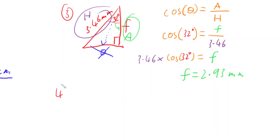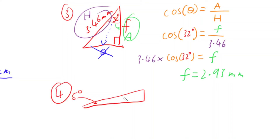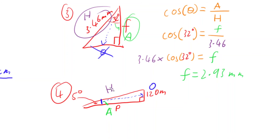Let's look at one last example. I have a right-angled triangle with an angle of 5 degrees, the side labelled P as the unknown, and the side 120 metres. Labelling the sides: the hypotenuse is the long slopey side, the opposite side from the 5-degree angle is 120 metres, and the adjacent side is P. I don't have the hypotenuse — I have opposite and adjacent, so I use the tan ratio again.